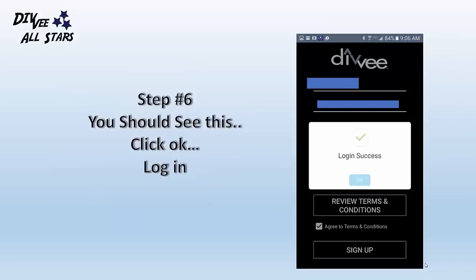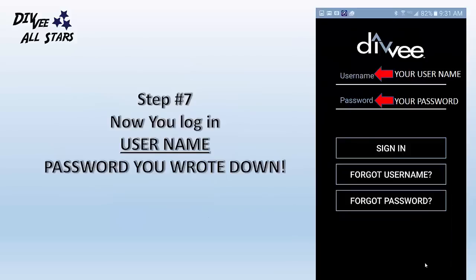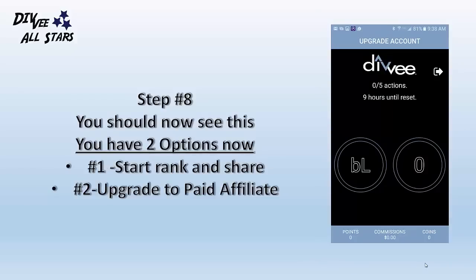Then click sign up. This should take you to a screen that says 'Log in successful.' Then you can log in using your username and the password you should have written down. You should now see this screen, and you will have two options. Option one: you can start your rank and share activities. Option two: you can upgrade to a paid affiliate.